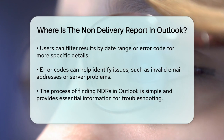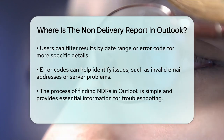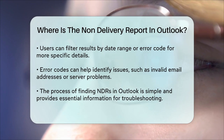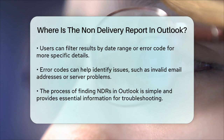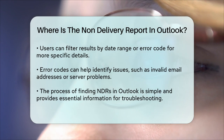To sum it up, finding the non-delivery report in Outlook is pretty straightforward. You just need to go to your Sent Items, open the email you're tracking, and use the Open Delivery Report option. This will give you all the information you need to figure out what happened to your email.